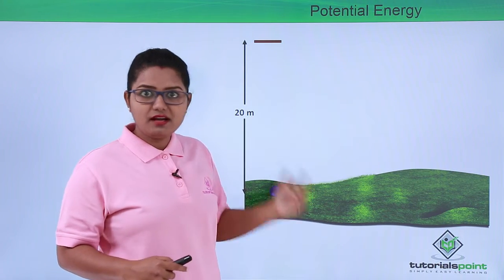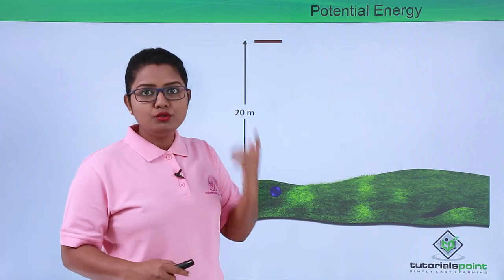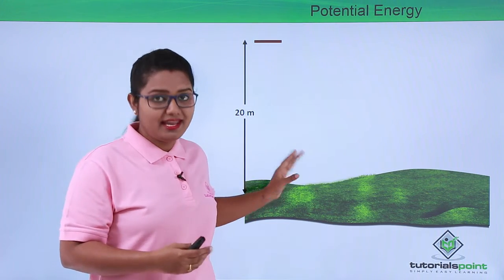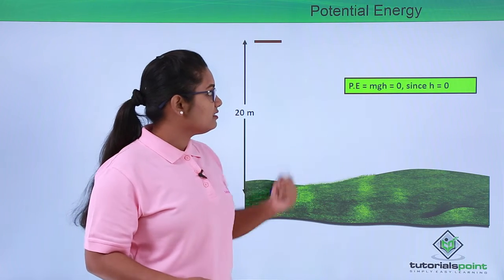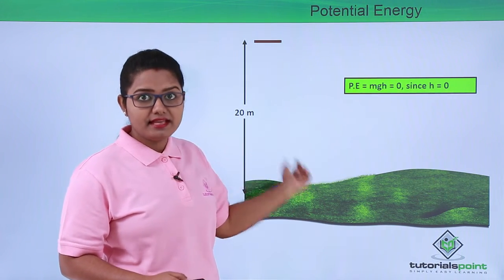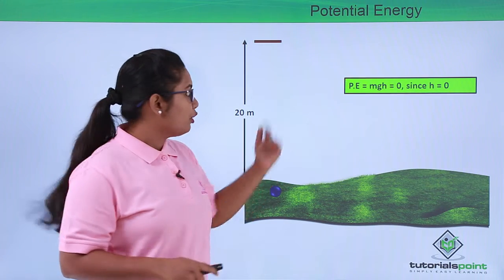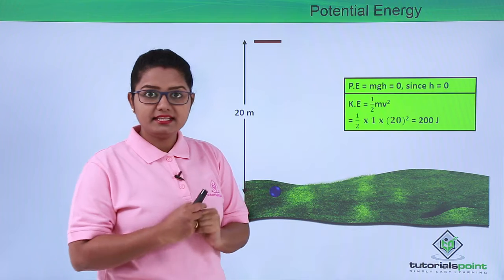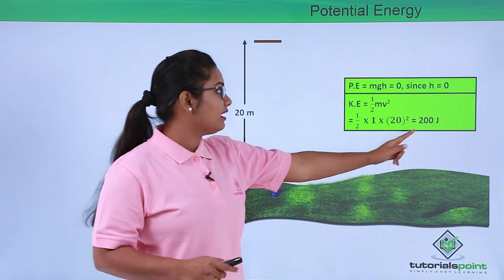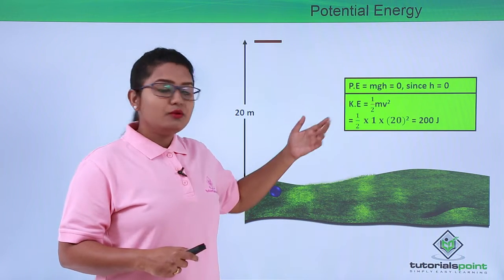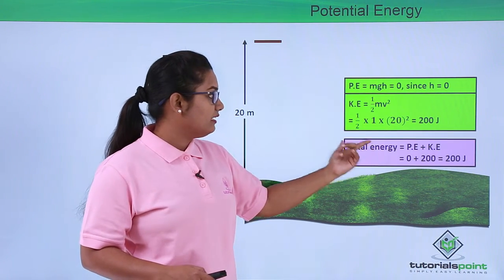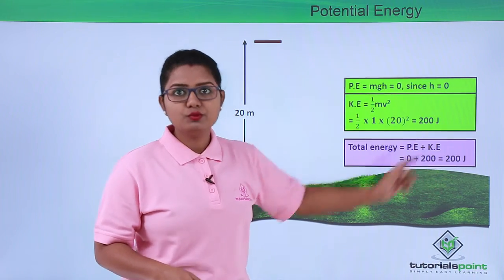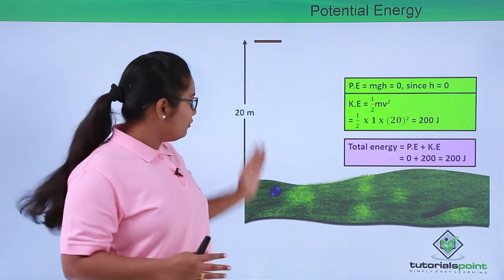Now let us calculate the total energy of this body when it is just about to touch the ground. At this point, the height of the body is zero, so the potential energy reduces to zero. The final velocity of the body can be calculated using the third equation of motion, giving us a velocity of 20 meters per second. Substituting these values into the formula for kinetic energy, we get the kinetic energy to be 200 joules.